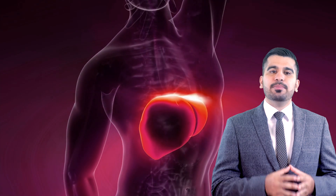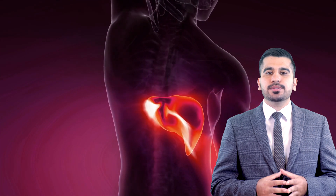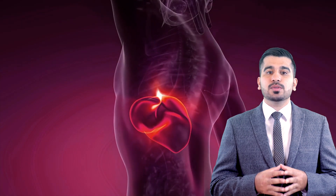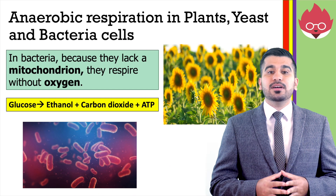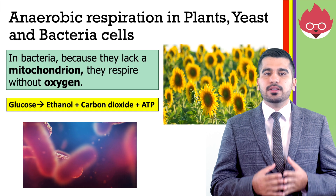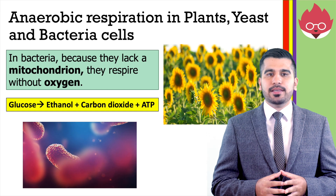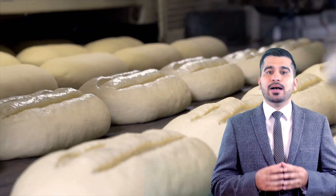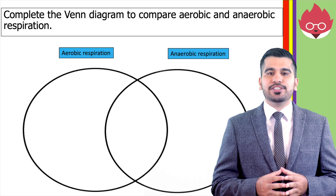Lactic acid is taken to the liver by the blood and either oxidized to carbon dioxide and water, or converted to glucose and then glycogen. Glycogen levels in the liver and muscles can then be restored. In plants, fungi, and bacteria, they can also respire anaerobically. Glucose breaks down to produce ethanol and carbon dioxide plus ATP. This type of respiration is useful for humans — we use it to make bread and alcoholic drinks in a process known as fermentation, which involves yeast. Plants switch from aerobic to anaerobic respiration in waterlogged soil when root cells cannot get enough oxygen.